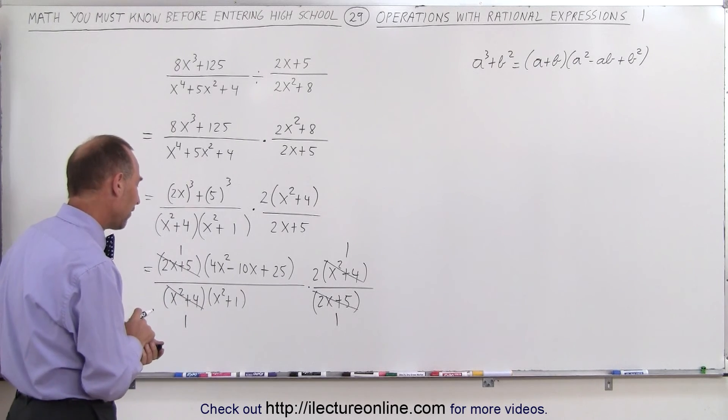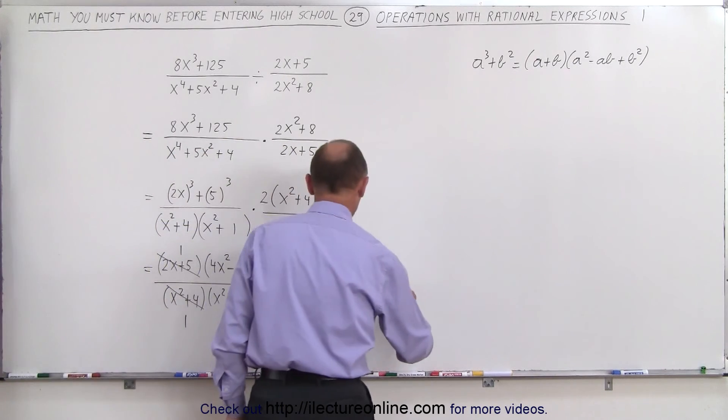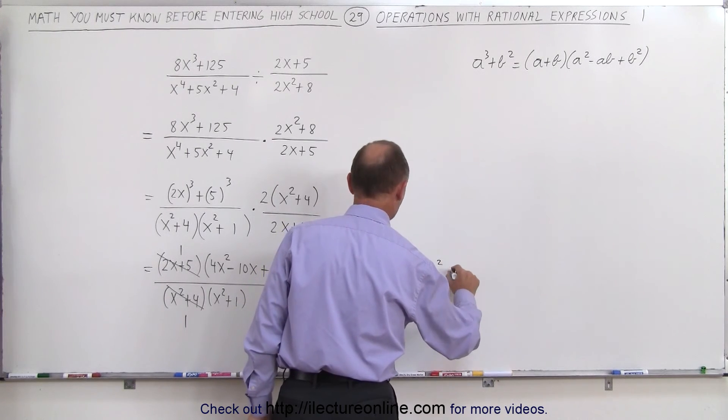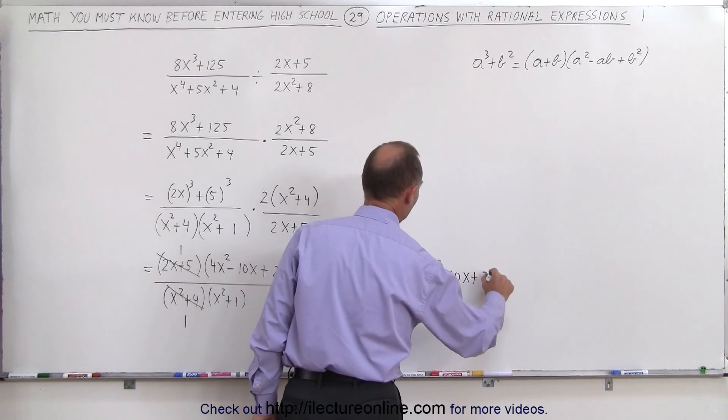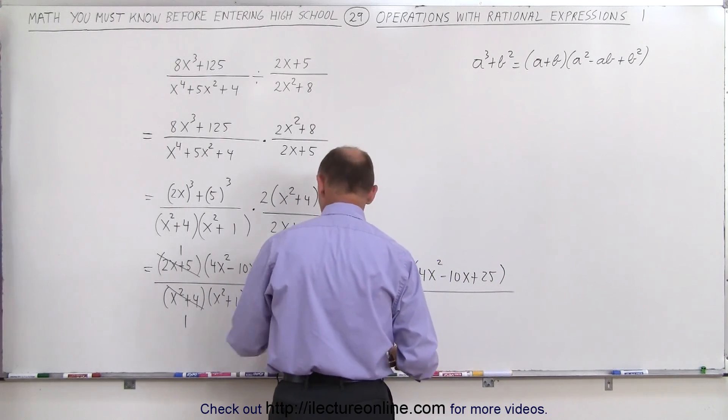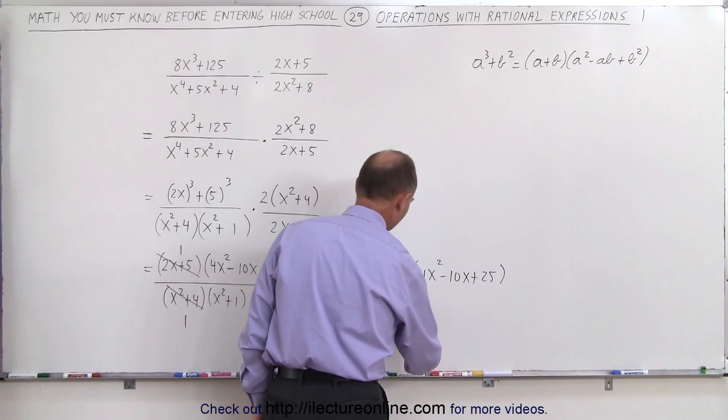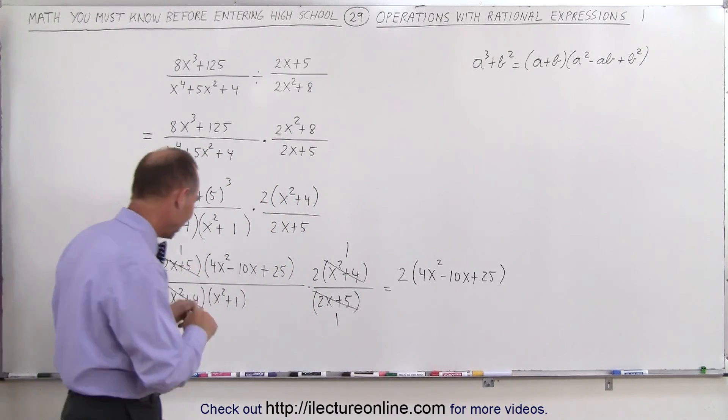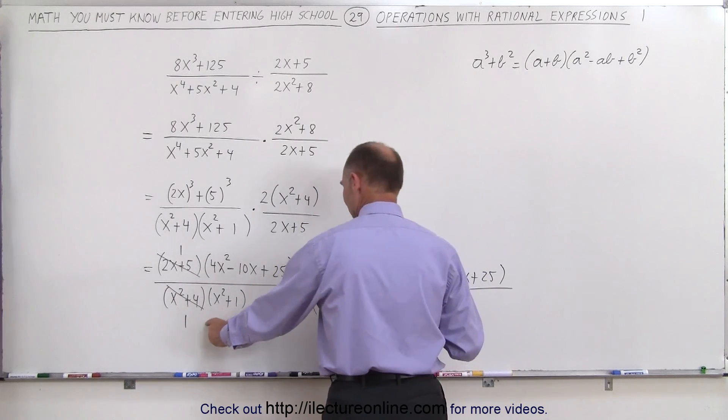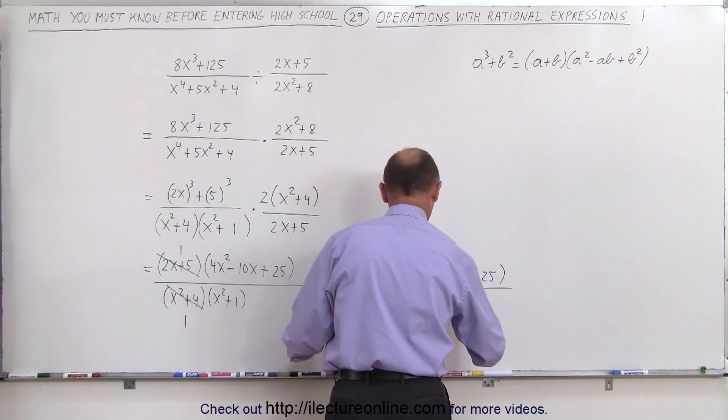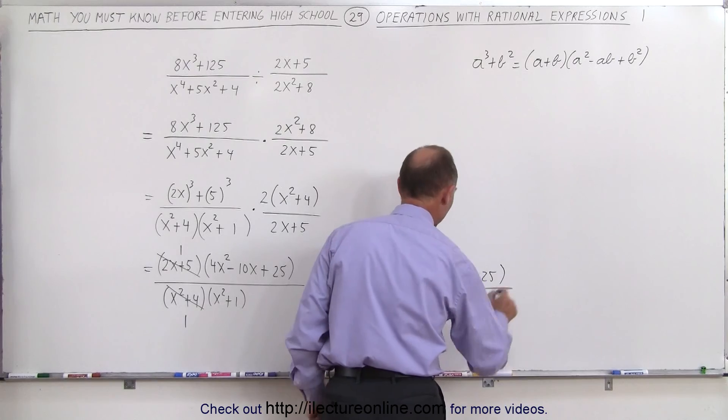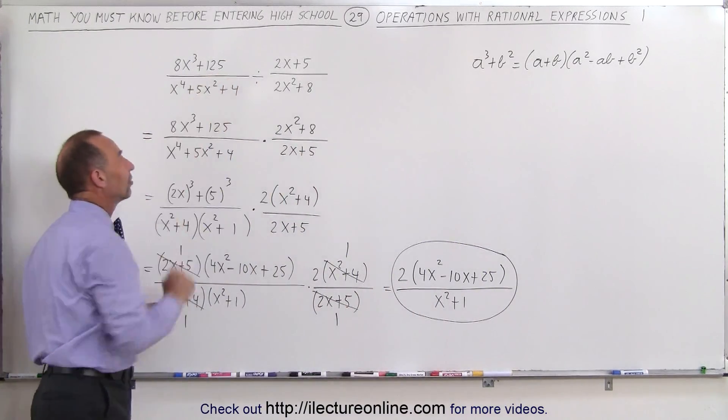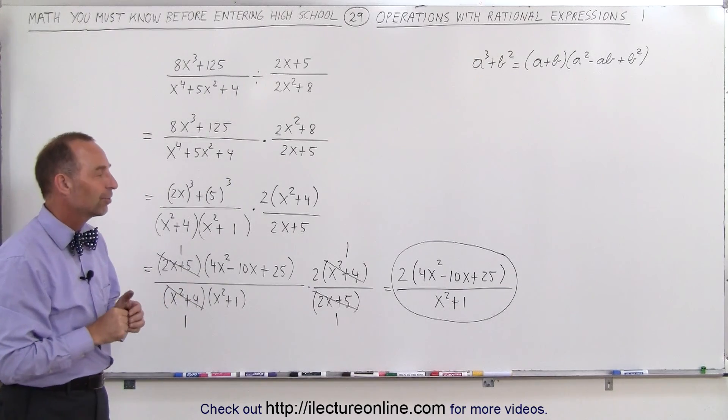So in the end, this becomes 2 times 4x squared minus 10x plus 25 all divided by - well, we don't have to put anything in the denominator. Oh yes, I forgot, it's x squared plus 1. Can't forget about that one. We still have 1 times this times this, which is x squared plus 1 in the denominator. And this is the final simplest form of this rational expression, and that's how it's done.